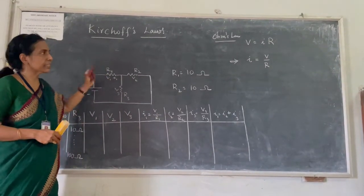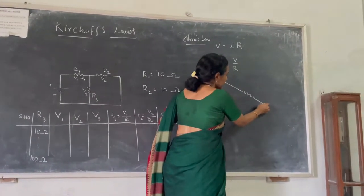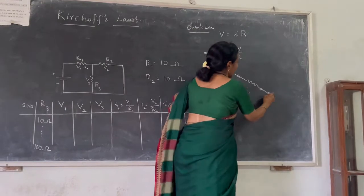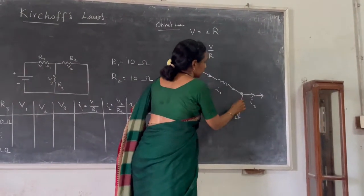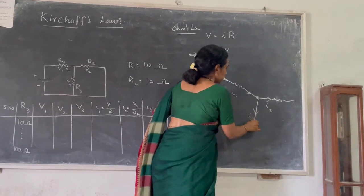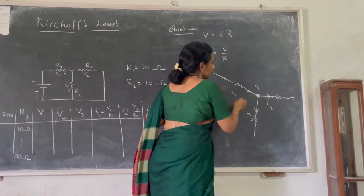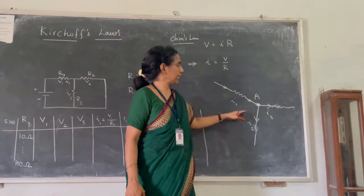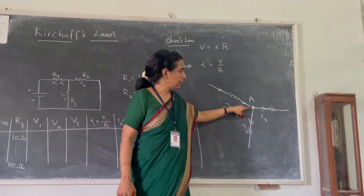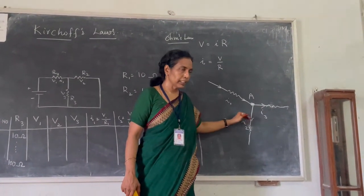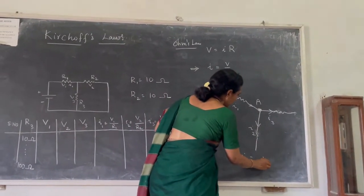Kirchhoff's first law states that the current passing towards a junction is equal to the current passing away from the junction. If we see the diagram, I1 is the current coming towards the junction, and I2 and I3 are moving away from the junction. According to Kirchhoff's first law, I1 is equal to I2 plus I3.